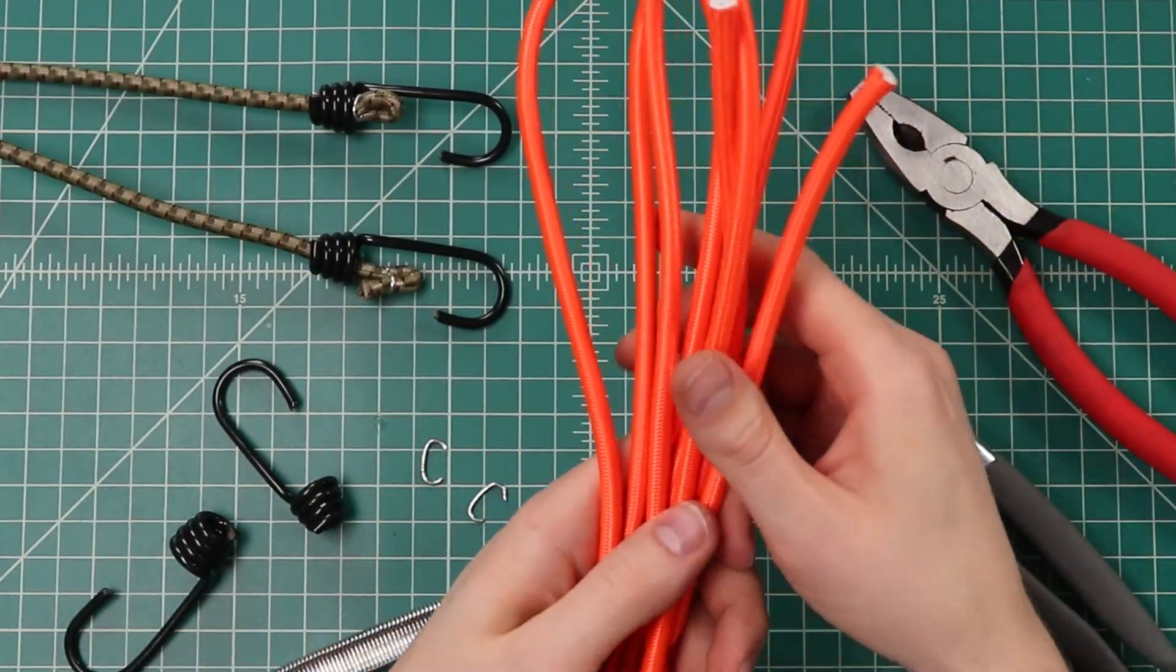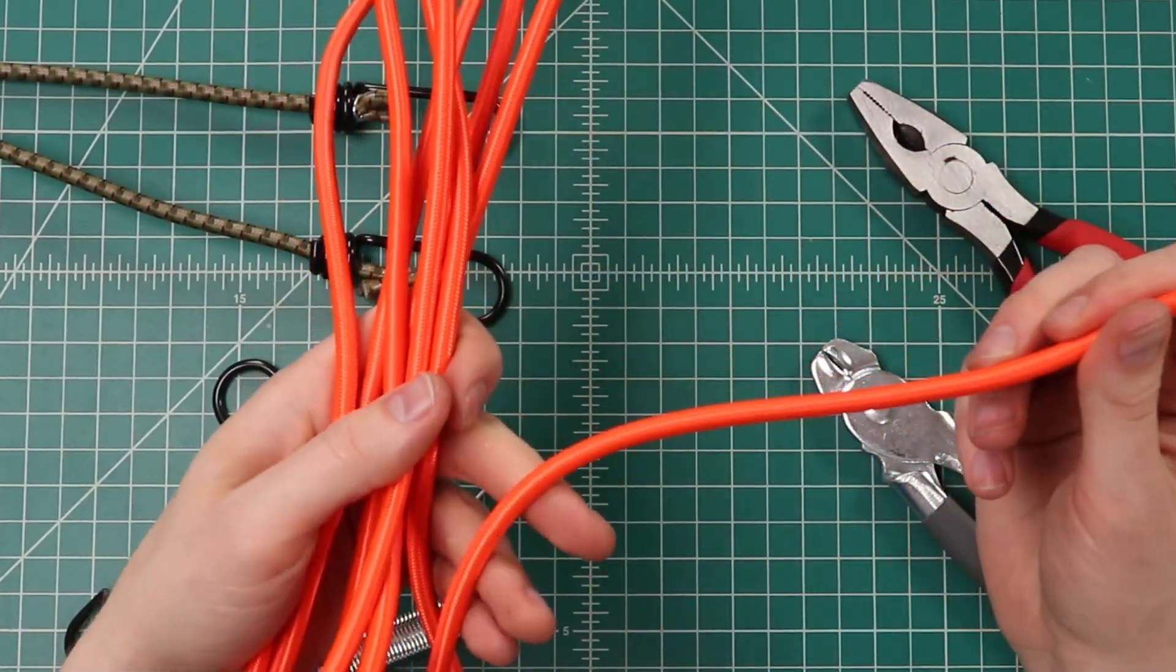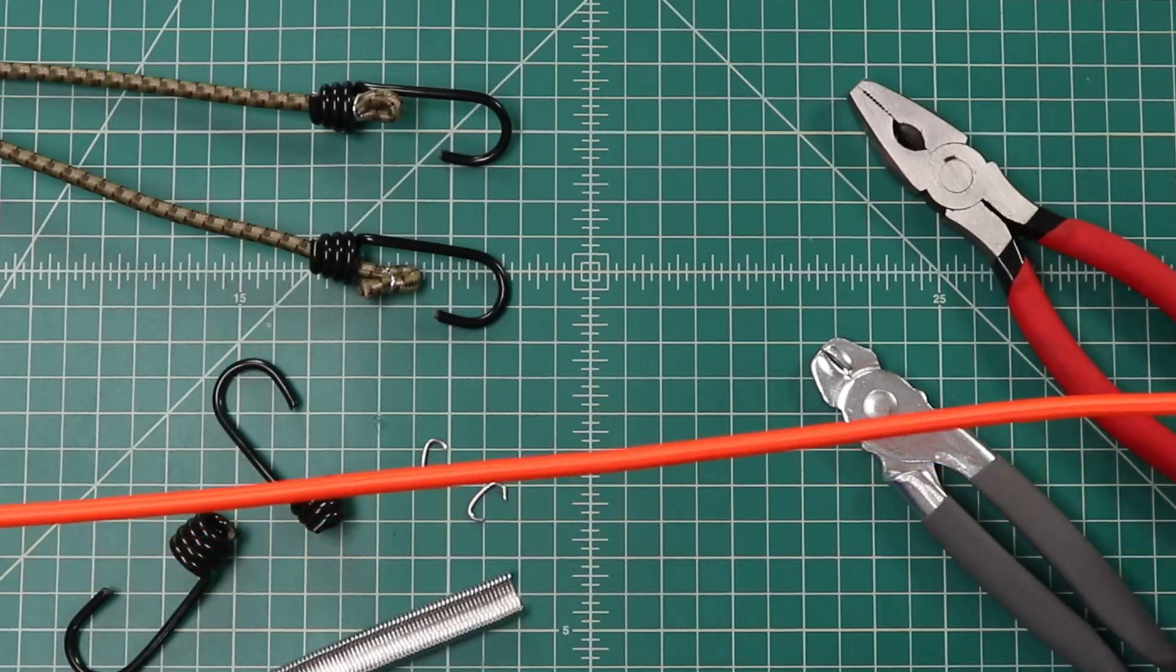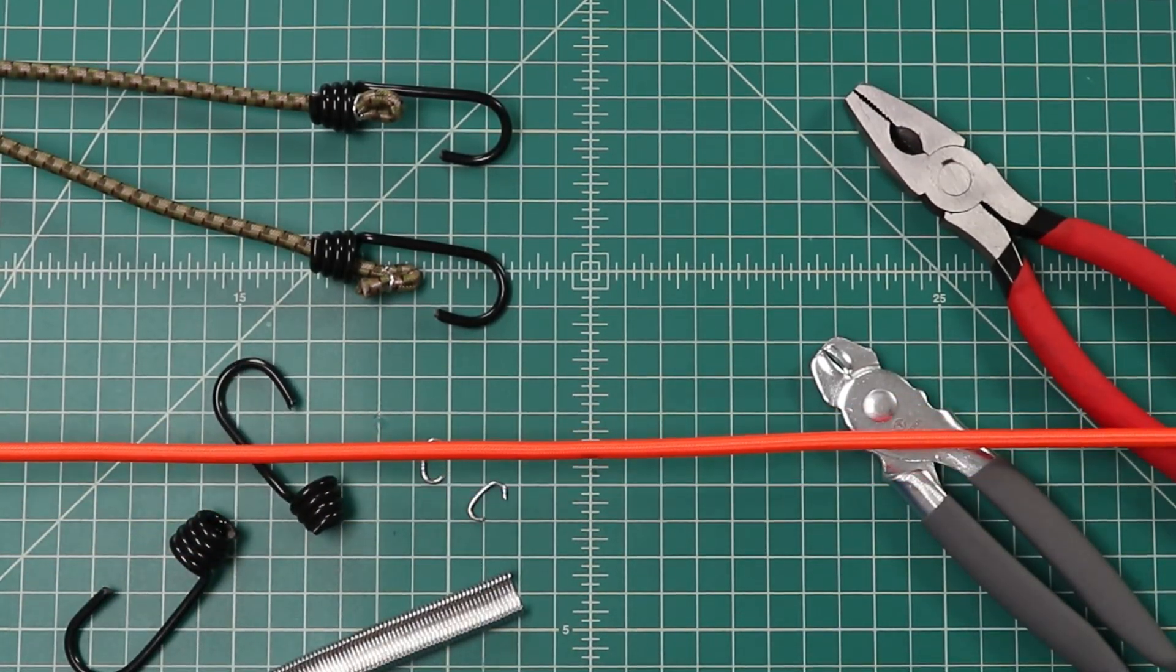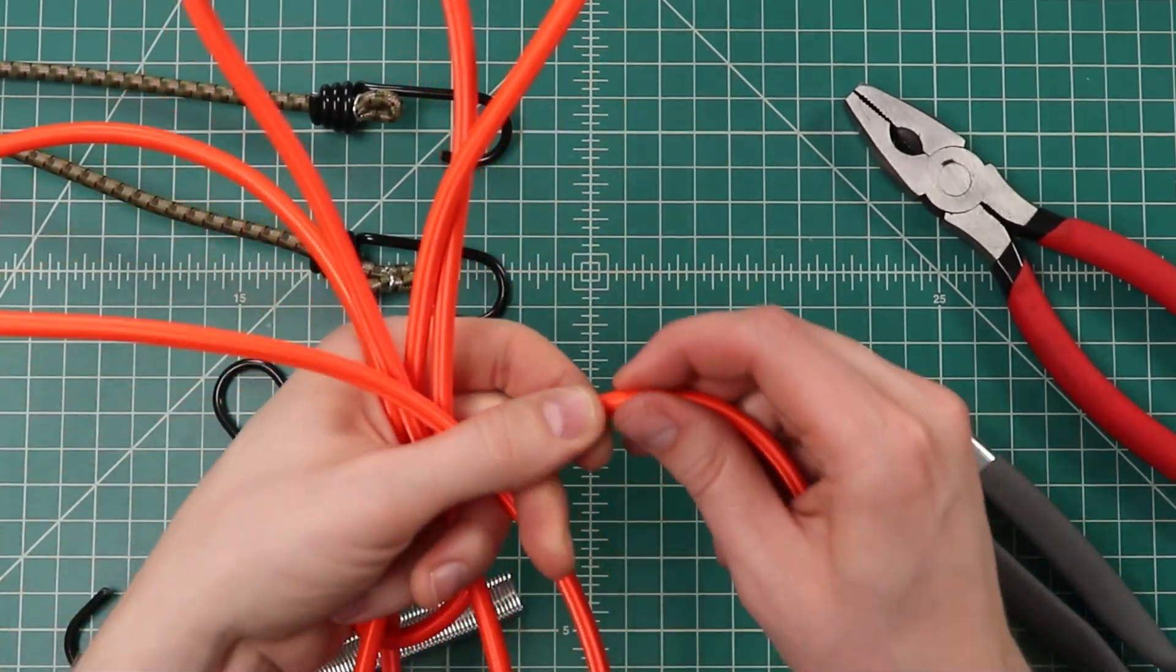So to start off, we'll take our bungee cord and decide on the length that we want our finished cord to be. So I'm just going to measure it out on my mat here at three feet, and I'm just going to add a couple inches to that so we have some room to double over on the ends.